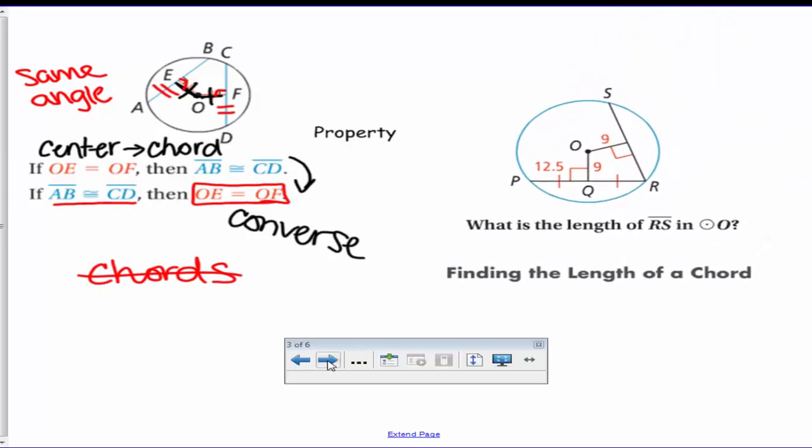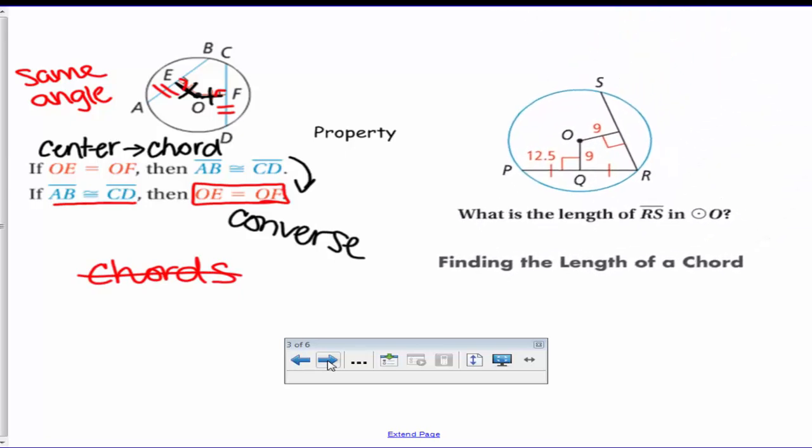So let's look at an example of this property with numbers. It wants to know what is the length of RS, the length of this chord. First off, you need to check that they're the same distance, so you have 9 and 9, so they are the same distance and you have the same angle. Since we know that, this chord is going to be equal. SR is congruent to PR.